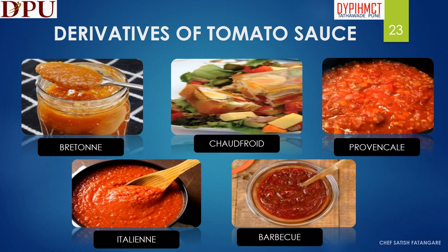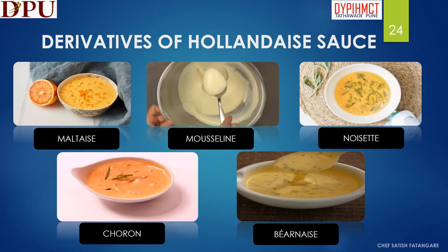The derivatives of tomato sauce are Bretonne, Chaudfroid, Provençale, Italian and Barbecue sauce. In this slide we will discuss about the derivatives of hollandaise sauce. The derivatives of hollandaise sauce are Maltaise, Mousseline, Noisette, Choron and Béarnaise.